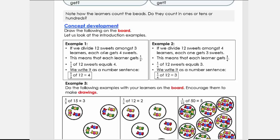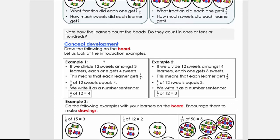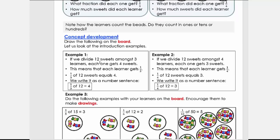I'm first going to focus on example number one and two. Now what we want the learners to do is to create this image in their minds. What we've done there in the introduction, we're going to take it to the next step. We're going to ask if we divide 12 sweets amongst three learners, each one gets four sweets. This means that each learner gets one-third. One-third of 12 sweets equals to four.